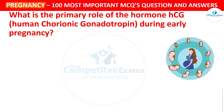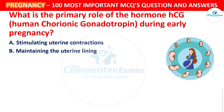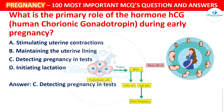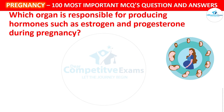Next question: What is the primary role of the hormone HCG (human chorionic gonadotropin) during early pregnancy? Your options: Stimulate uterine contractions, Maintain the uterine lining, Detect pregnancy in a test, or Initiate lactation. The correct answer is it detects pregnancy in a test. HCG is the hormone detected by pregnancy tests, and its levels rise during early pregnancy.